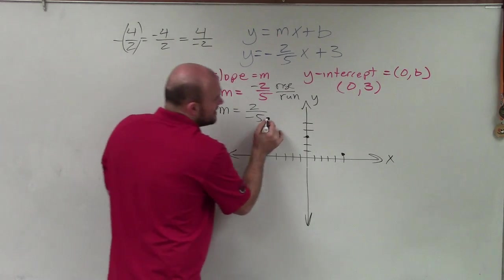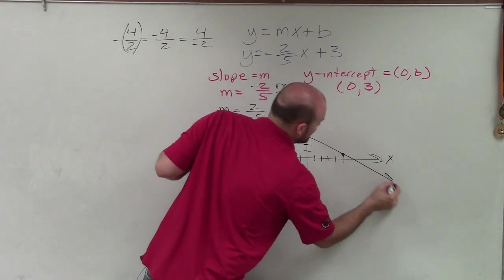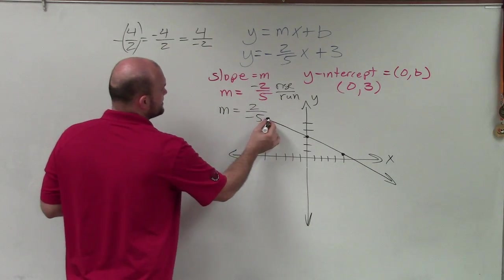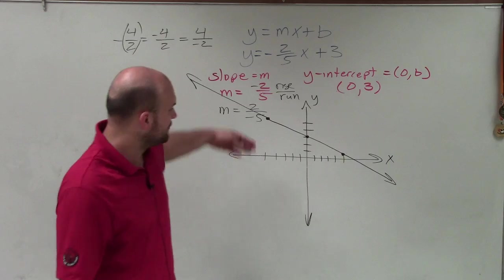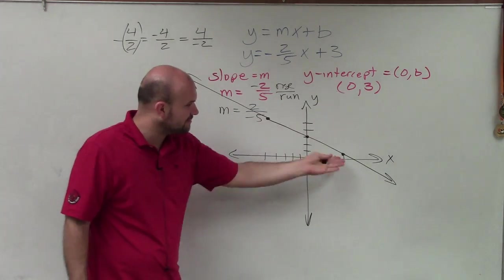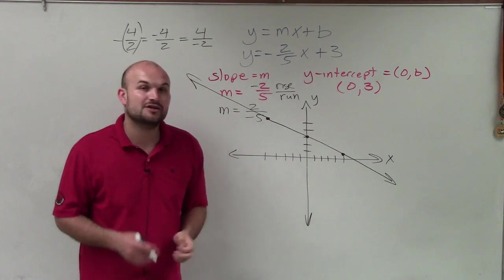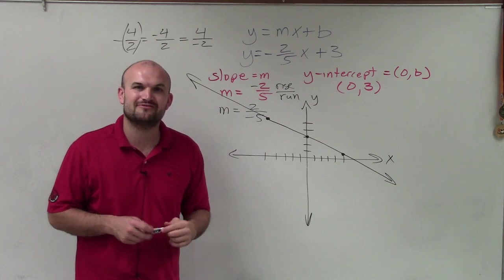And what you'll see is these points—it doesn't matter which direction I go into—it's still going to create a straight line. But therefore, all we need is to do that once, because then we'll have our straight line. And that is how you graph an equation in slope-intercept form. Thanks.